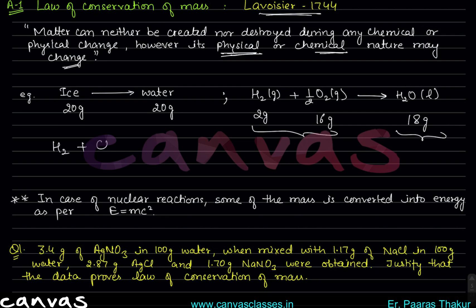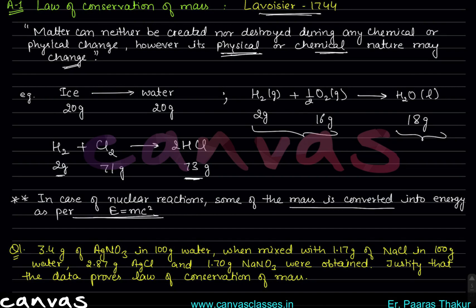Now consider: H2 + Cl2 gives you 2 HCl. If we have 2 gram hydrogen and it generates 73 gram HCl, then how much Cl2 should there be? If the product mass is 73 gram, then the reactant mass must also be 73 gram. So 2 gram + 71 gram = 73 gram. Note that this law of conservation of mass is not valid in nuclear reactions, because in nuclear reactions some mass converts into energy according to E = mc².